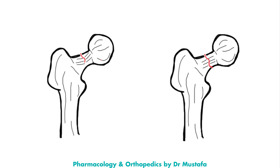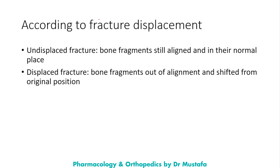Here we have an example: in the complete fracture, we see a full split of the bone with two fragments, while in the incomplete fracture there is an incomplete split and part of the bone is still continuous.